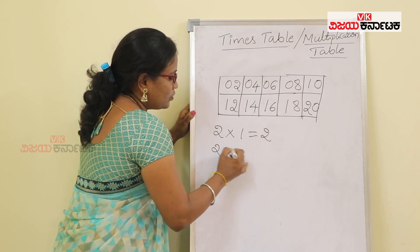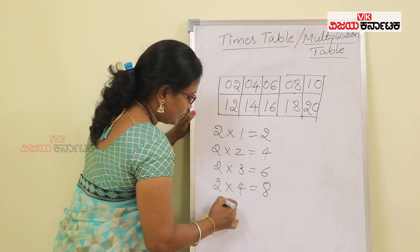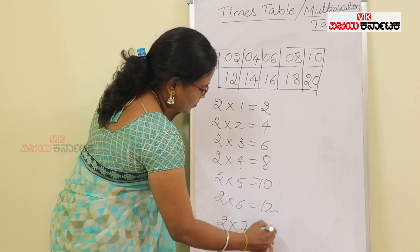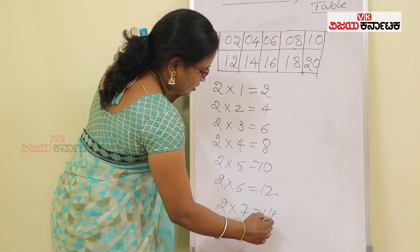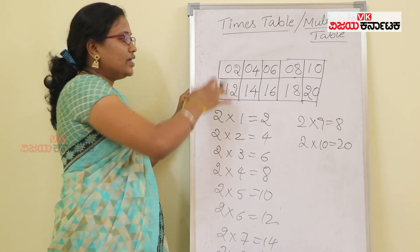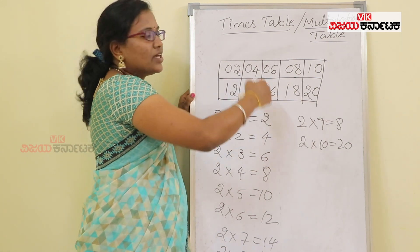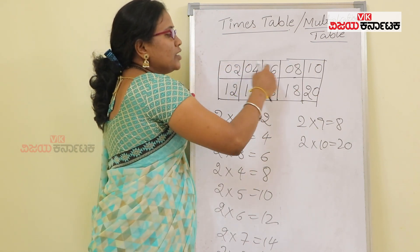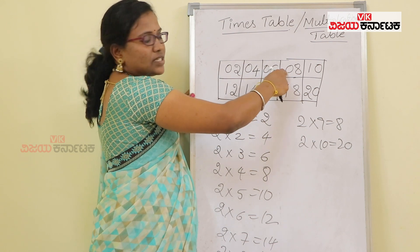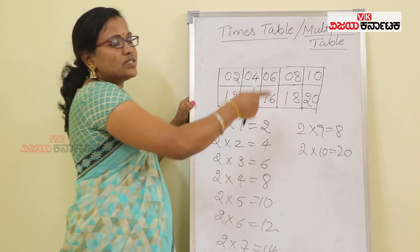2 ones are 2, 2 twos are 4, 2 threes are 6, 2 fours are 8, 2 fives are 10, 2 sixes are 12, 2 sevens are 14, 2 eights are 16, 2 nines are 18, 2 tens are 20. To write this table, you need 2 rows and divide into 5 columns. The unit place digits are 2, 4, 6, 8, 0 — repeat: 2, 4, 6, 8, 0. Then the tens digits: first 0s, then 1s, then 2.